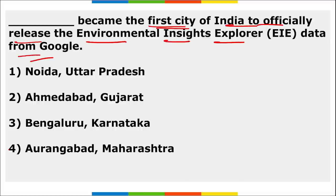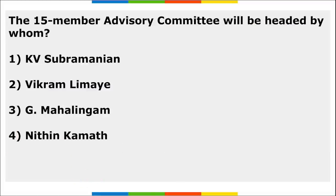Which city became the first city in India to officially release the Environmental Insight Explorer (EIE) data from Google? It was Aurangabad, Maharashtra. This data will help research groups develop sustainable solutions and improve environmental conditions. The EIE data is consistent with Aurangabad's commitment to the UN's Race to Zero and Race to Resilience programs.